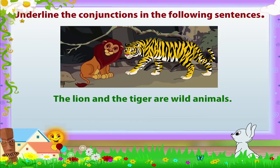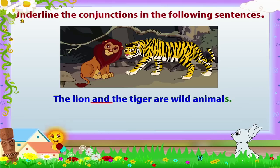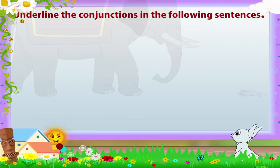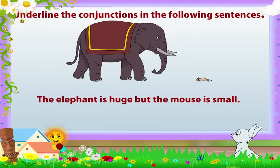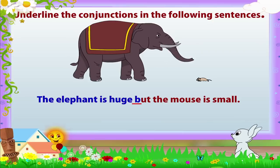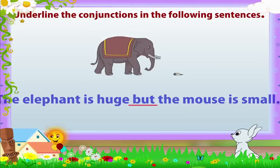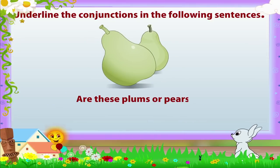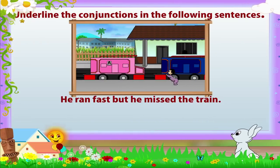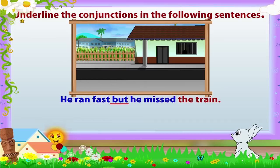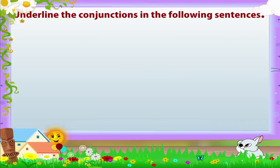'The lion and the tiger are wild animals' — the conjunction is 'and.' 'The elephant is huge but the mouse is small' — the conjunction is 'but.' 'Are these plums or pears?' — the conjunction is 'or.' 'He ran fast but he missed the train' — the conjunction is 'but.'